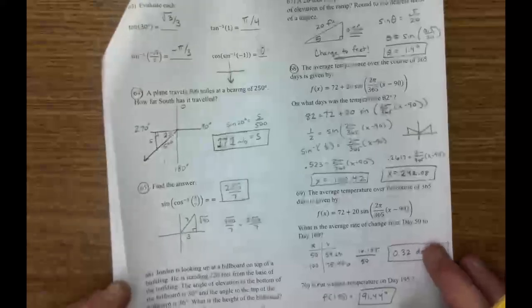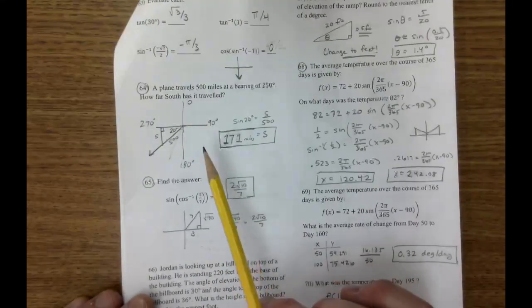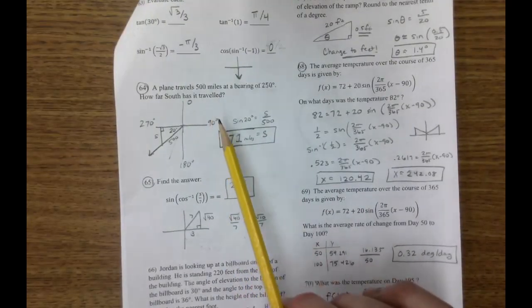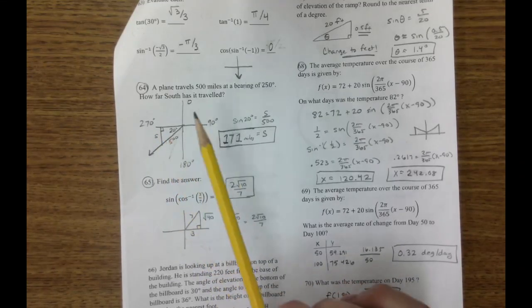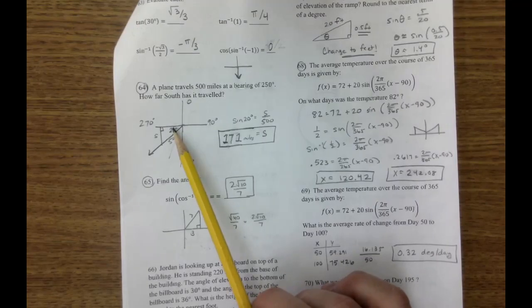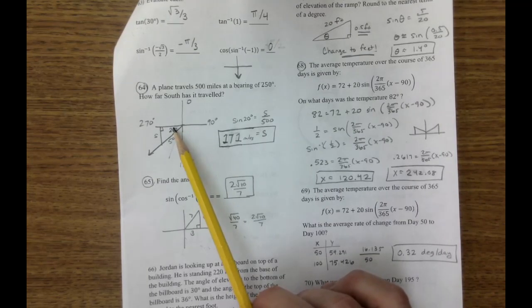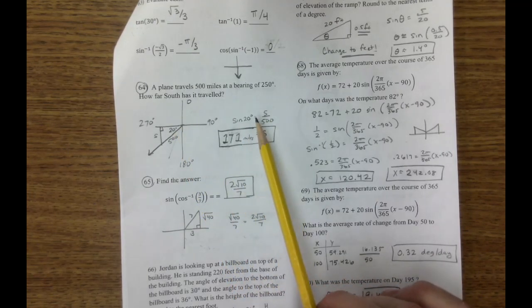On the last page, 64, another bearing problem. Make sure you write it out. Zero, ninety, one eighty, two seventy. Draw your triangle. Make your reference angle. Write it in there. I recommend you write 20, and you can write a sine function.